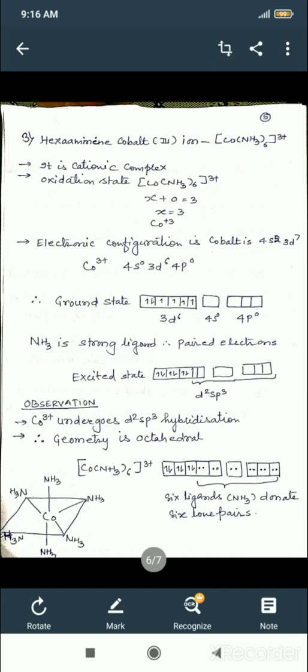Now, coordination number is six, so you need six empty orbitals. Count: d², then s, then p³—there are six empty orbitals now available in the excited state. Six ligands are now ready to donate their lone pairs: six lone pairs to six empty orbitals after undergoing hybridization.